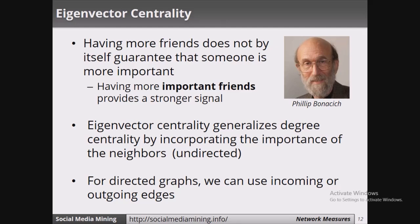How do we overcome this degree centrality problem? With eigenvector centrality. What eigenvector centrality does is it generalizes the degree centrality by taking the importance of the neighbors as well. It considers how important the neighbor is for a node and then calculates its centrality. In simple words, my centrality will be calculated by taking into consideration my friends' centrality as well.